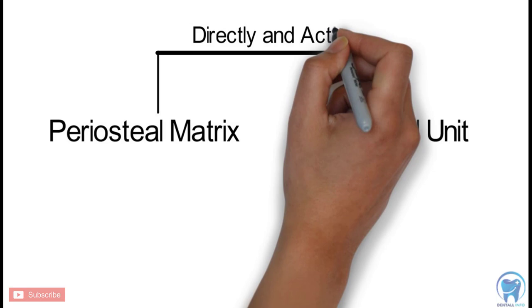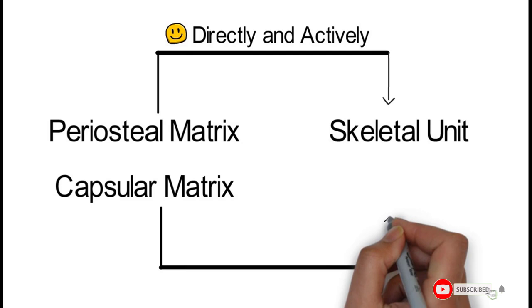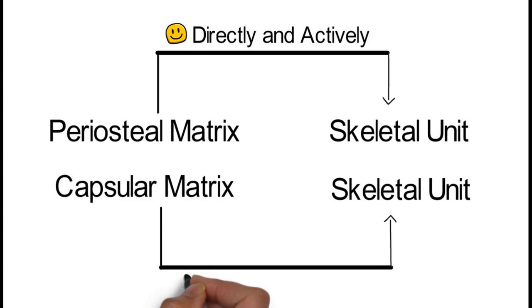When the influence of the capsular matrix on the skeletal tissues was studied, an indirect and passive influence of the capsular matrix on the skeletal tissues was seen. Remembering this point is also important.